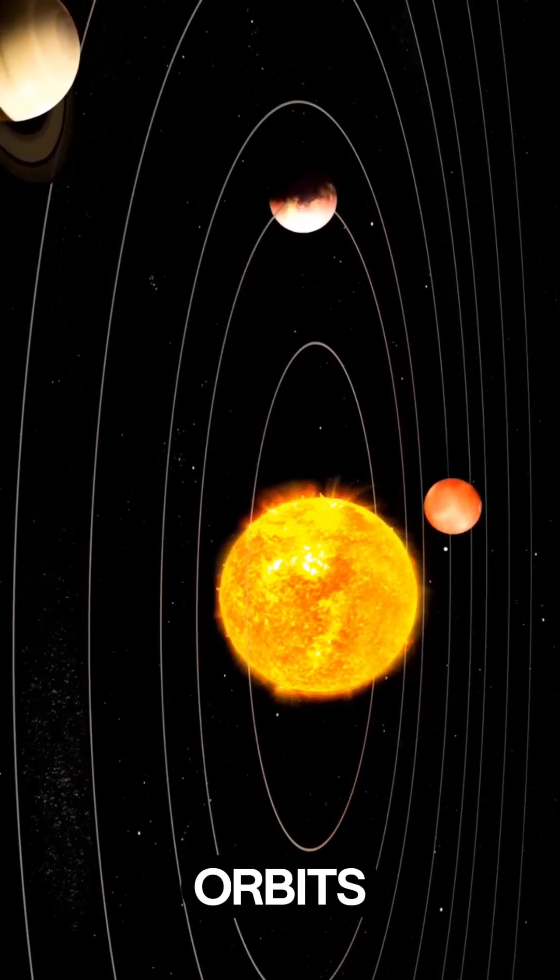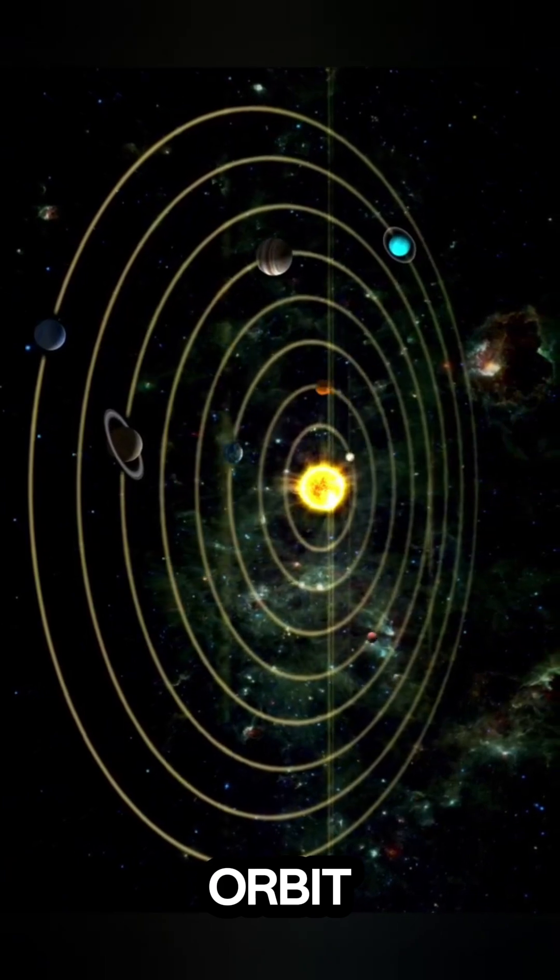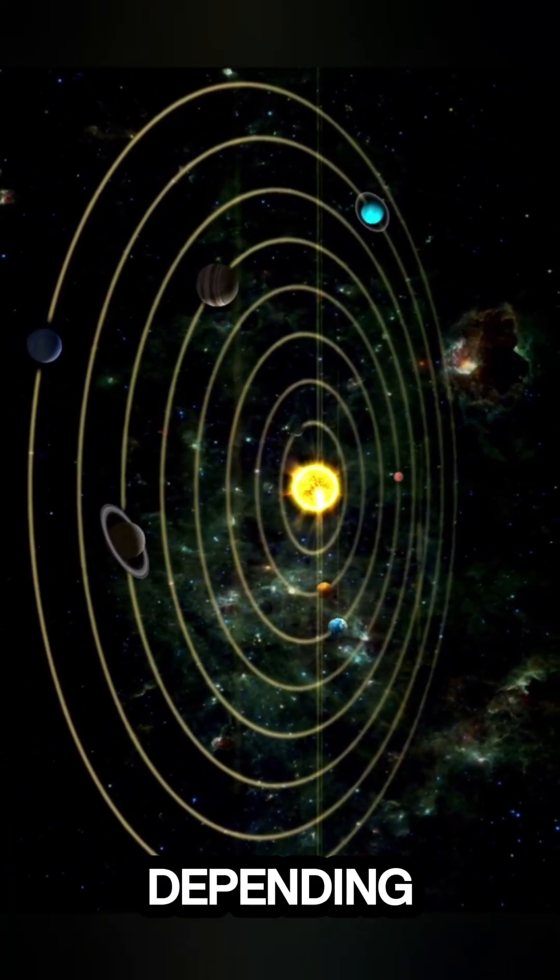Artificial satellites use different orbits, such as low Earth orbit, geostationary orbit, or polar orbit, depending on their purpose.